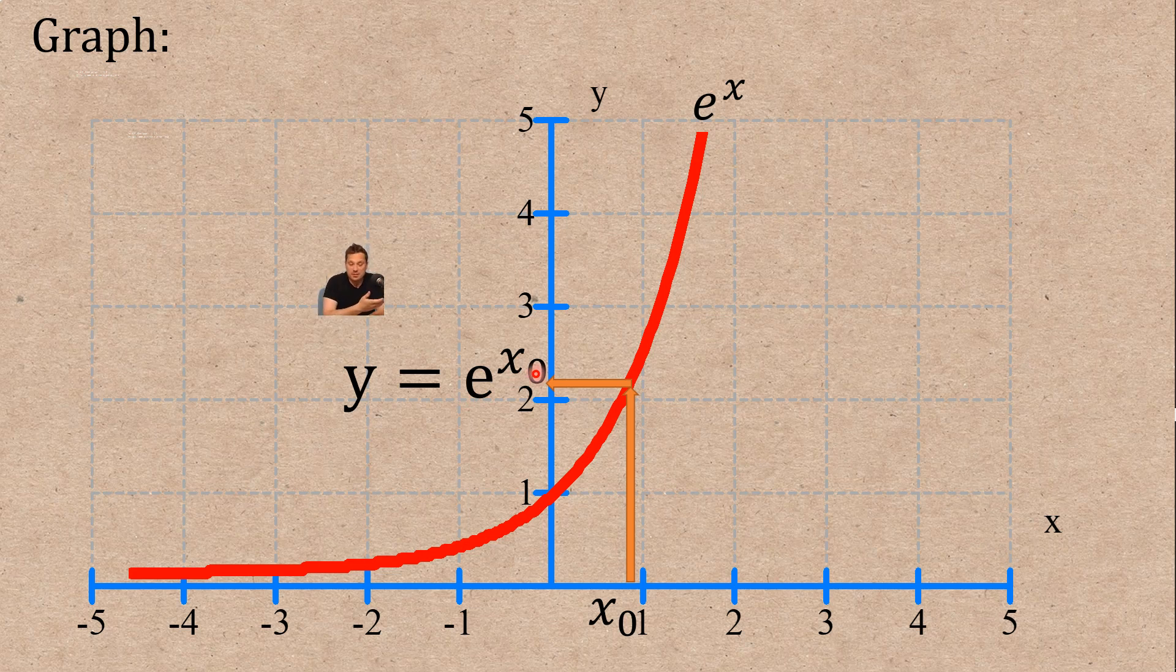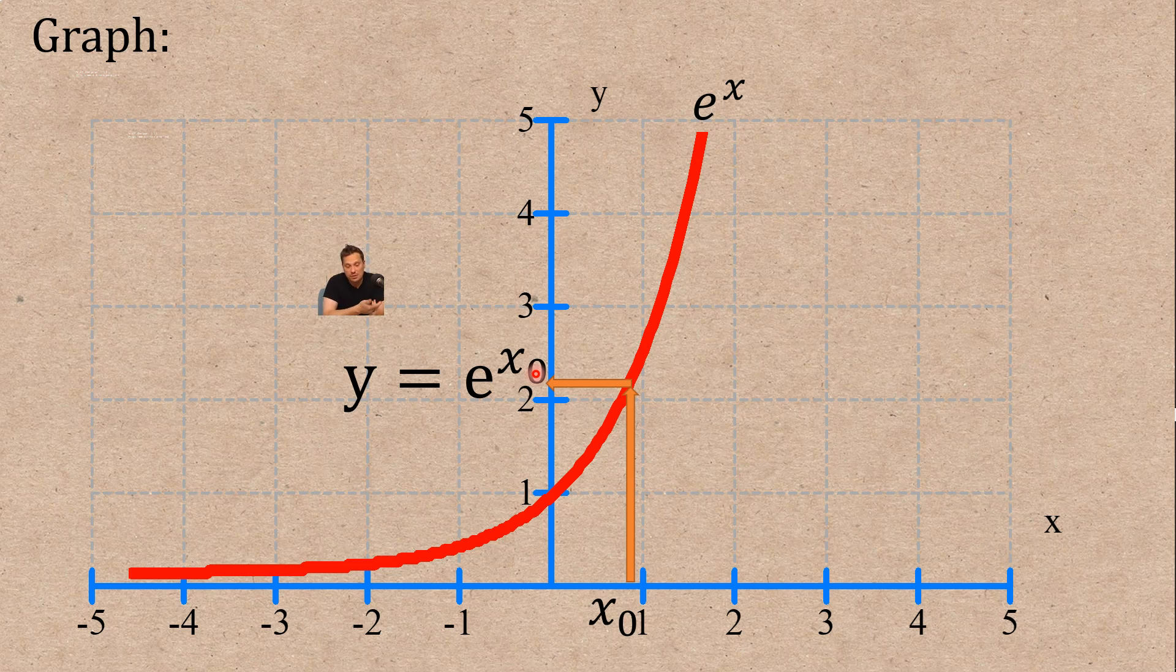Remember that basically represents a number. So for example like if x sub zero is one then it's e to the first. It's just a number. It's a disguised form of a number though. And sometimes people have trouble getting over that because we kind of get accustomed to writing 2 or 4 or 8 using specific symbols. But e to the x sub zero is just a disguised form of a number. So this demonstrates e to the x.